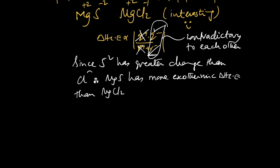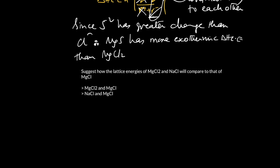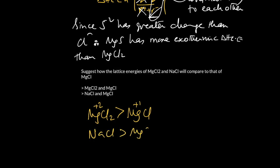Here is a question: what do you expect comparing MgCl₂ and MgCl? In MgCl₂, magnesium has +2 charge; in MgCl it would be +1. So MgCl₂ is more exothermic than MgCl because magnesium has greater charge (+2) and moreover its ionic size is smaller than Mg⁺, since after losing two electrons it loses its outer shell, giving a smaller radius and therefore greater lattice energy.